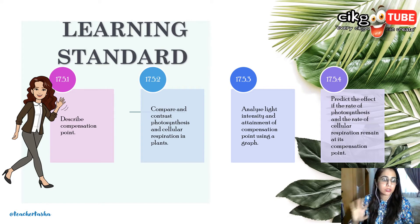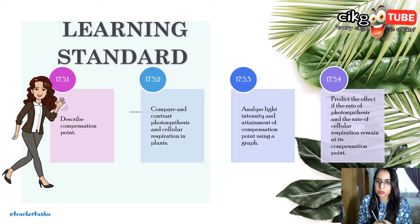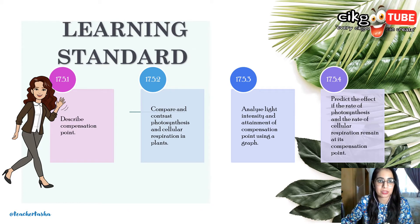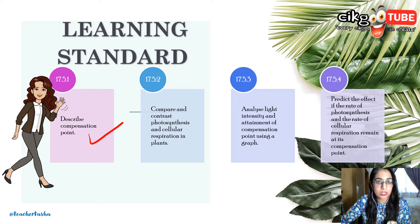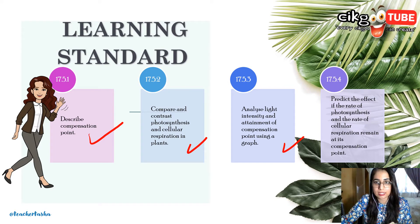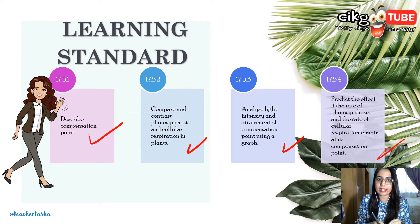Now the learning standards — as usual, we have to go through them so you know what you're going to learn. Do not skip this. In this topic, you must be able to: describe what the compensation point is; compare and contrast photosynthesis and cellular respiration in plants; analyze light intensity and attainment of the compensation point using a graph; and predict the effects when the rate of photosynthesis and the rate of cellular respiration are equal at the compensation point.